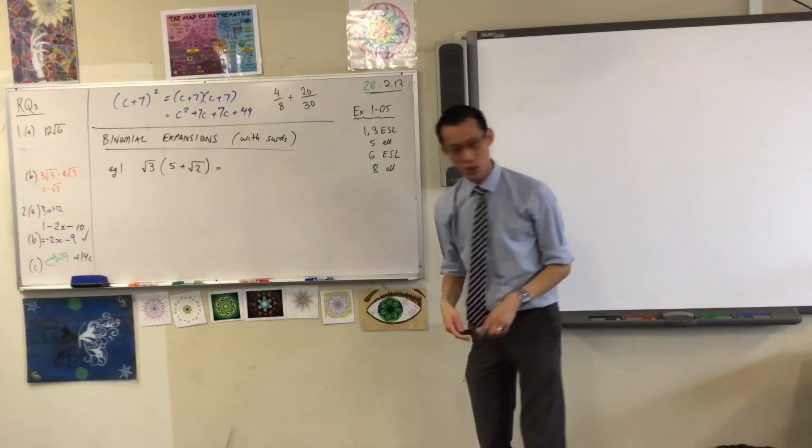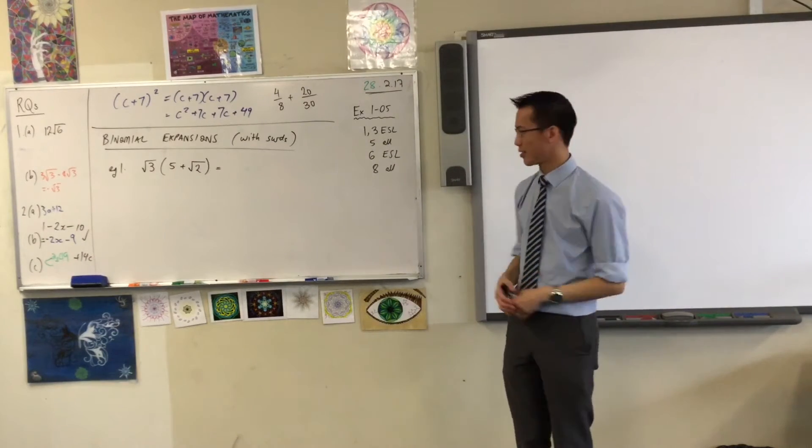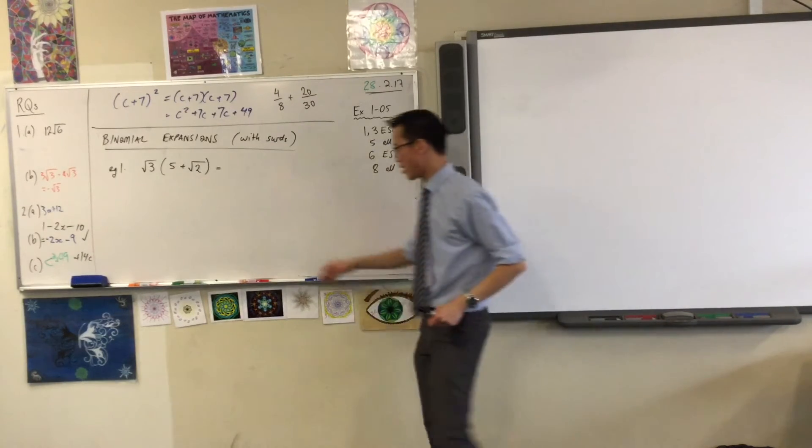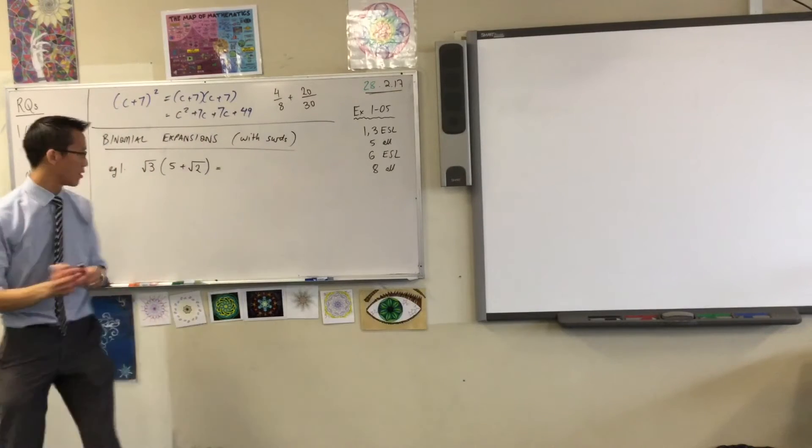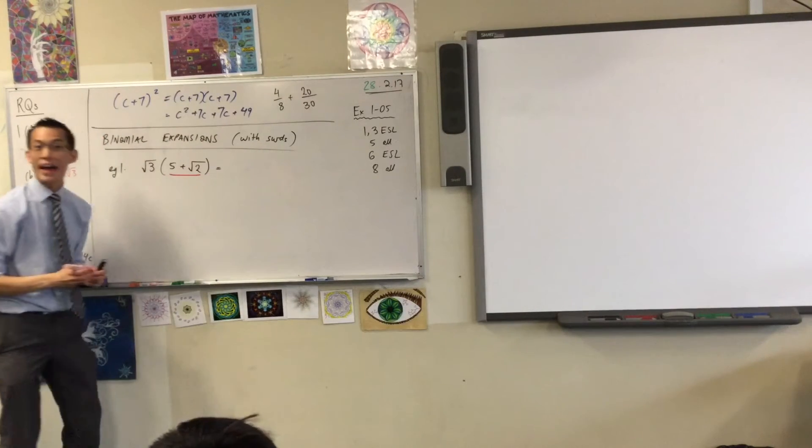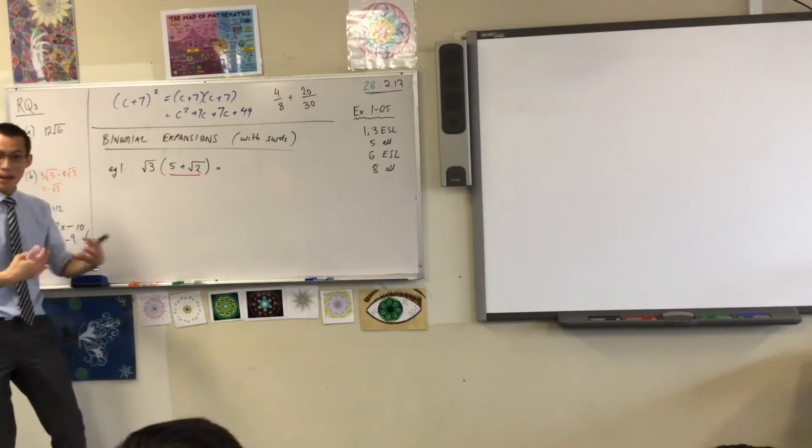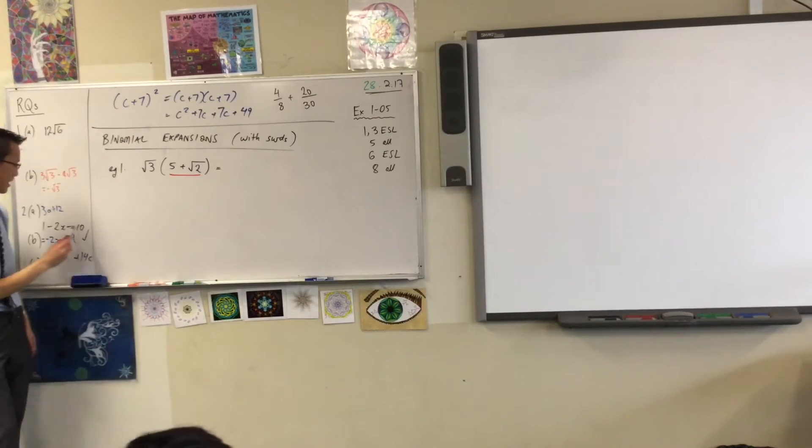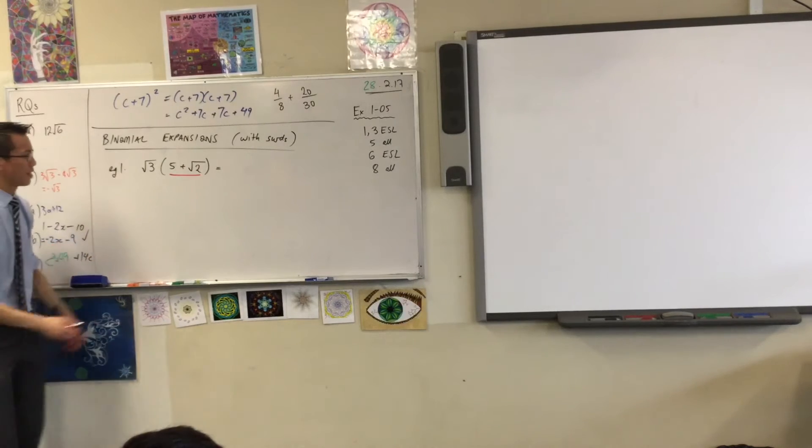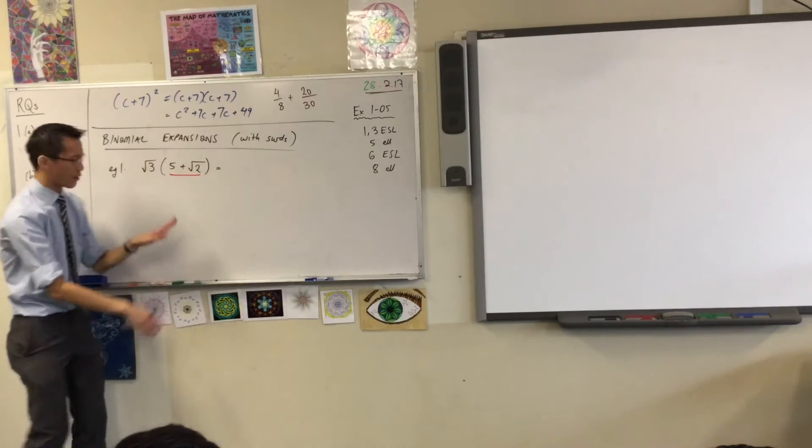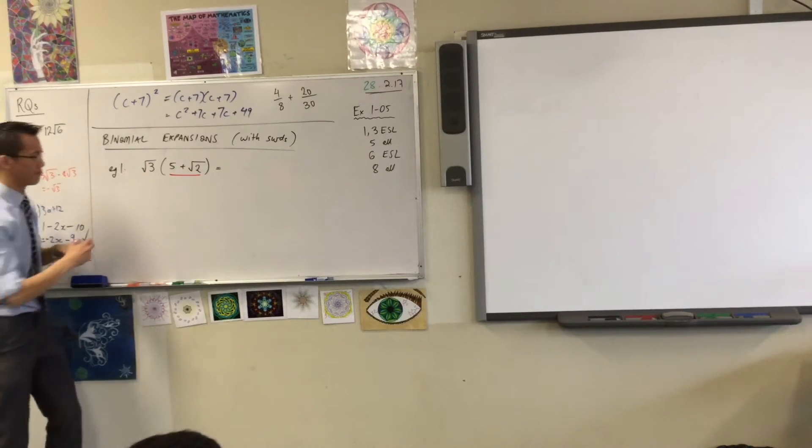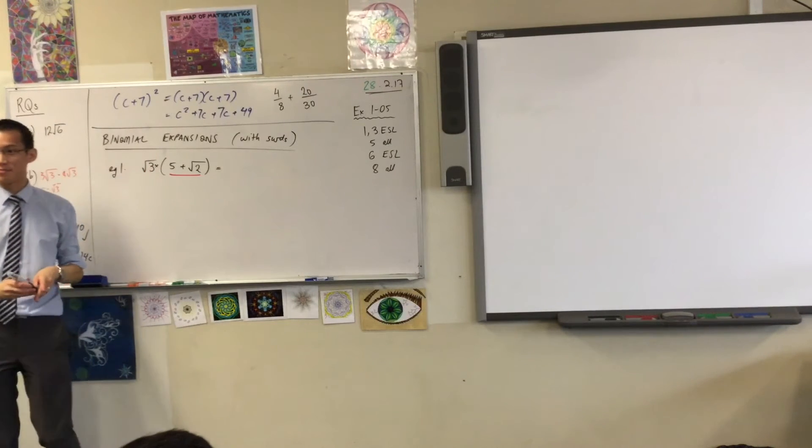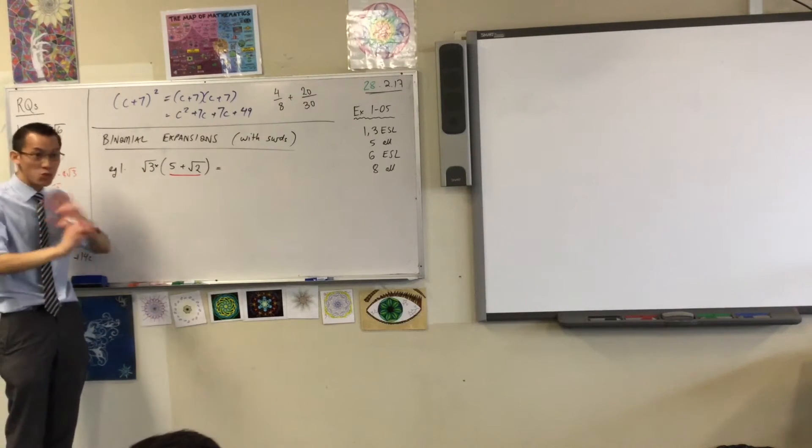So this is, can you see the binomial part of this question? The binomial part is the bit with two terms in it, which is here. Now, that's a binomial, and we're about to expand it. So it's a binomial expansion. Just like before, like with these questions over here, the brackets just mean, okay, whatever you've got out here, which is actually multiplication, just do it to everything inside. Just do it to everything.